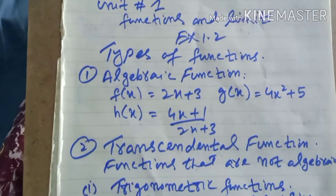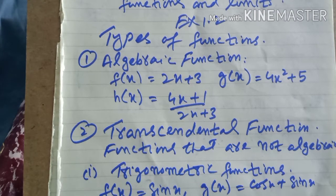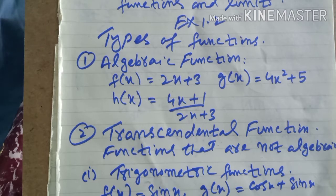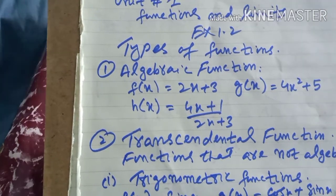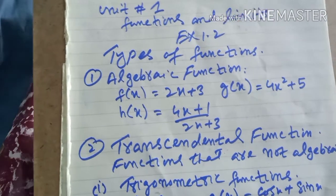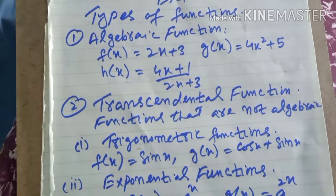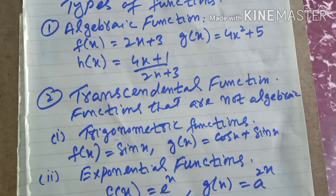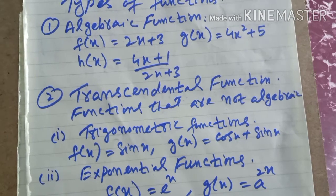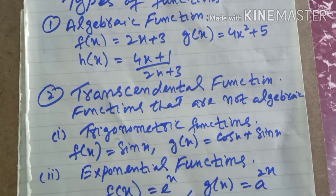Next is the transcendental function. A transcendental function is one that is not algebraic. The first type is the trigonometric function, which includes sin, cos, tangent, and cotangent. For example, f(x) = sin x and g(x) = cos x + sin x are trigonometric functions.